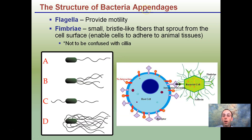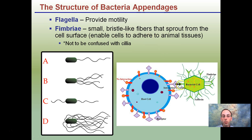The appendages of prokaryotes: flagella provide motility — cells can have one flagellum or many, both serving the same purpose of moving the cell. Fimbriae are small bristle-like fibers that sprout from the cell surface, enabling cells to adhere to animal tissues. They're different from cilia — cilia are used for locomotion, whereas fimbriae are specifically for adhesion. Prokaryotes use flagella as their primary form of movement.